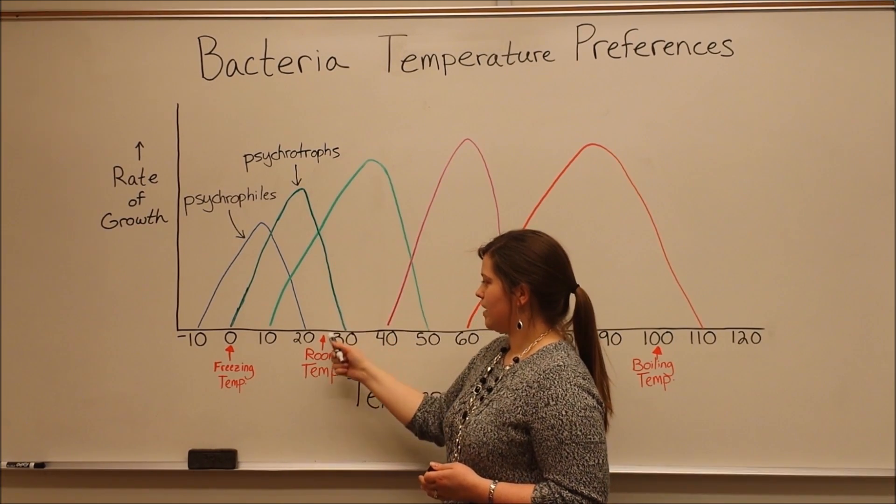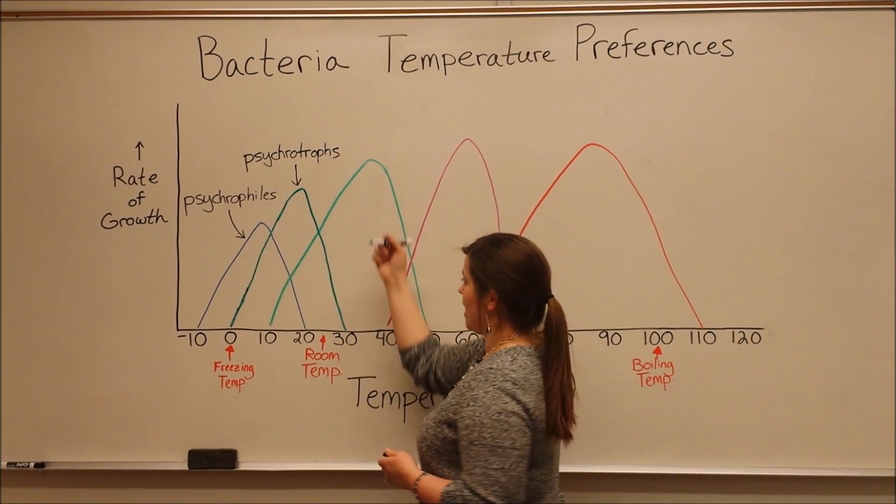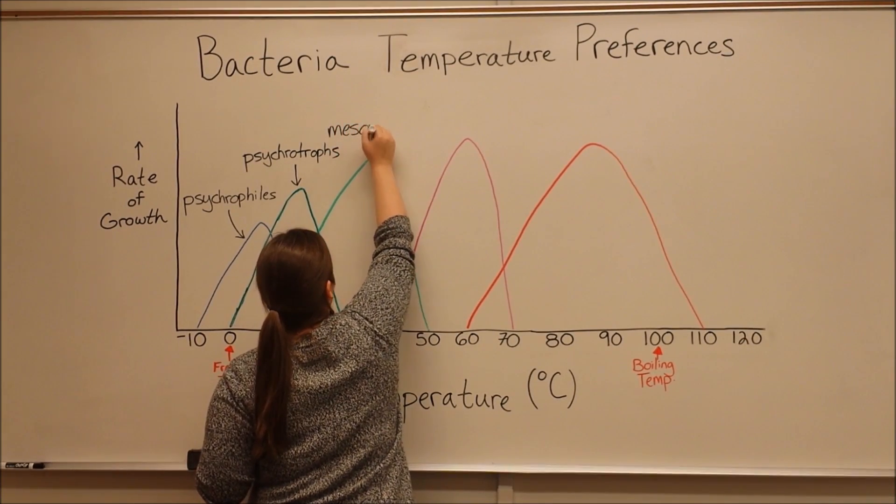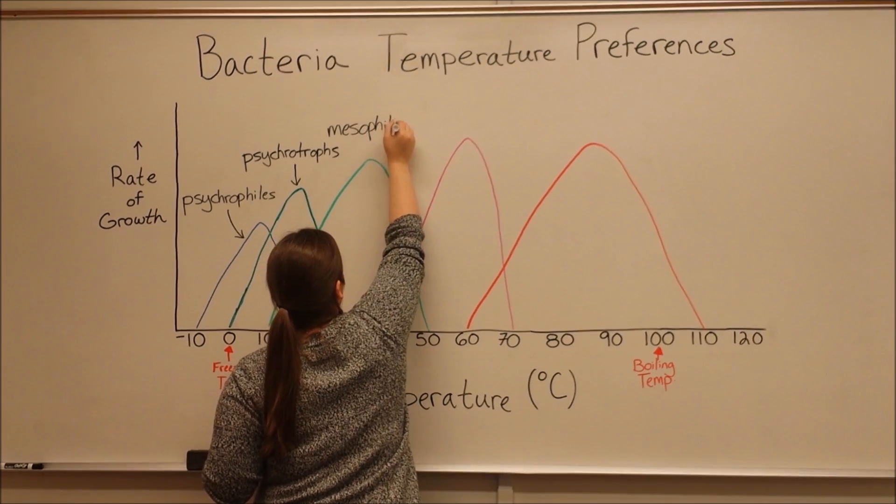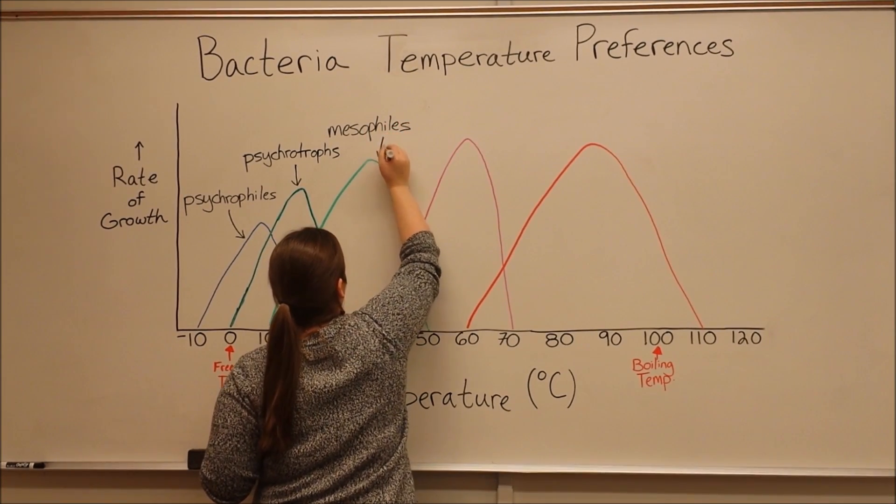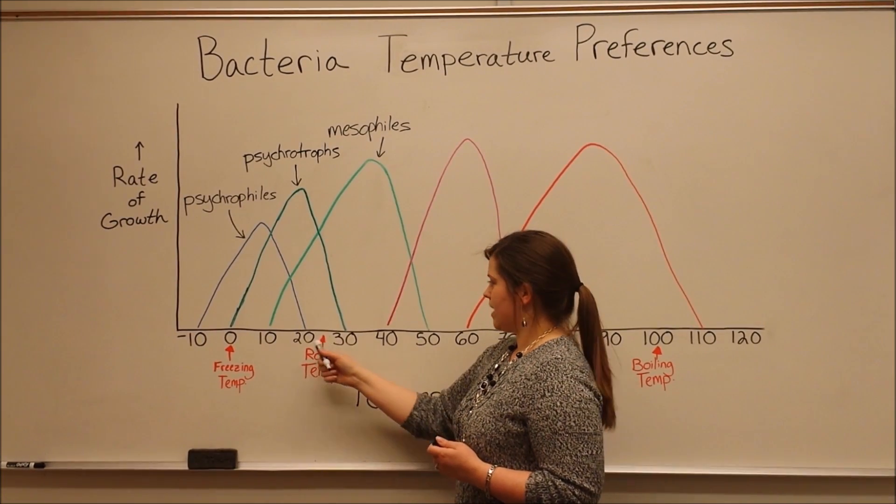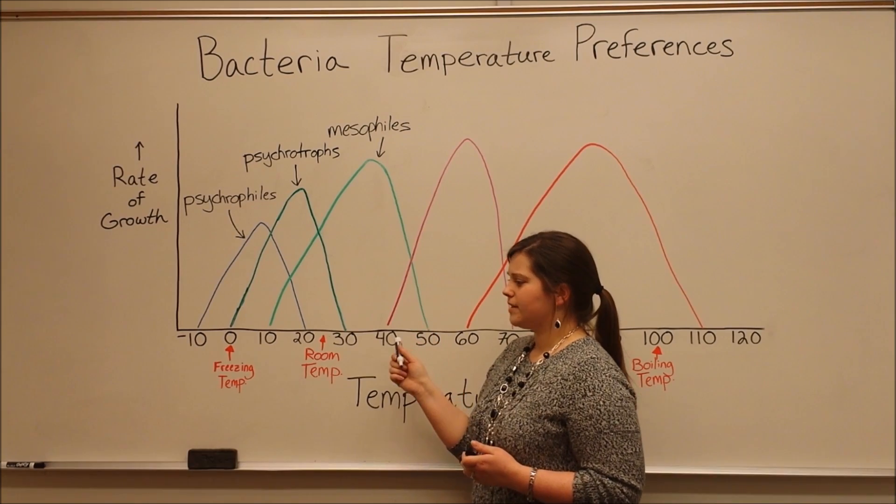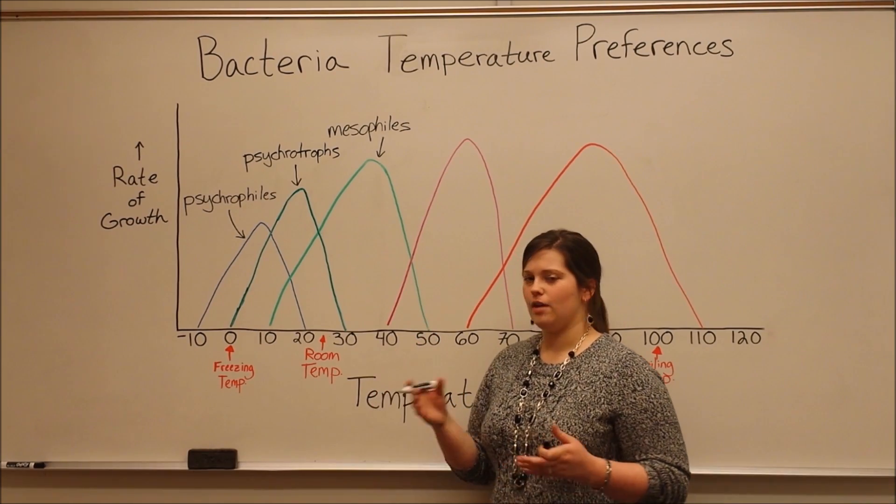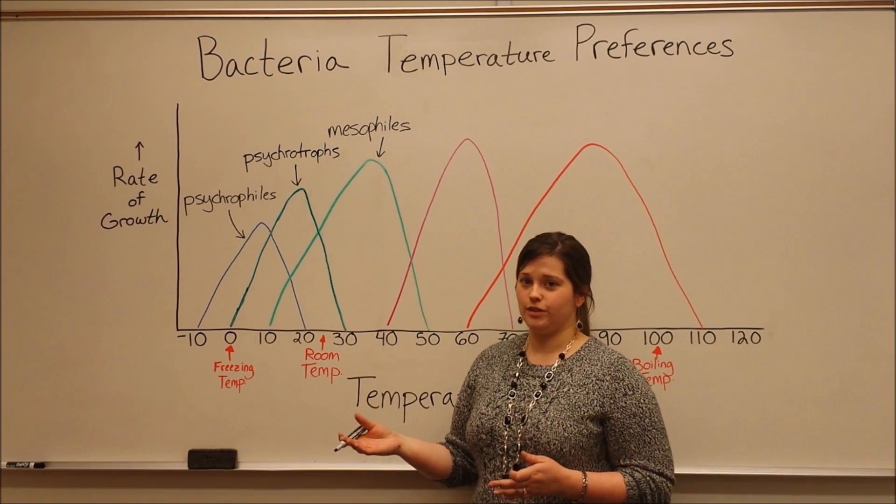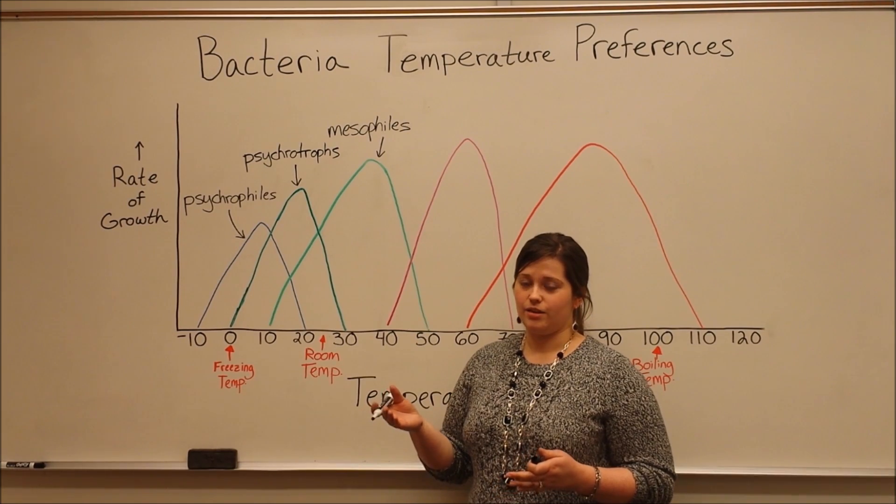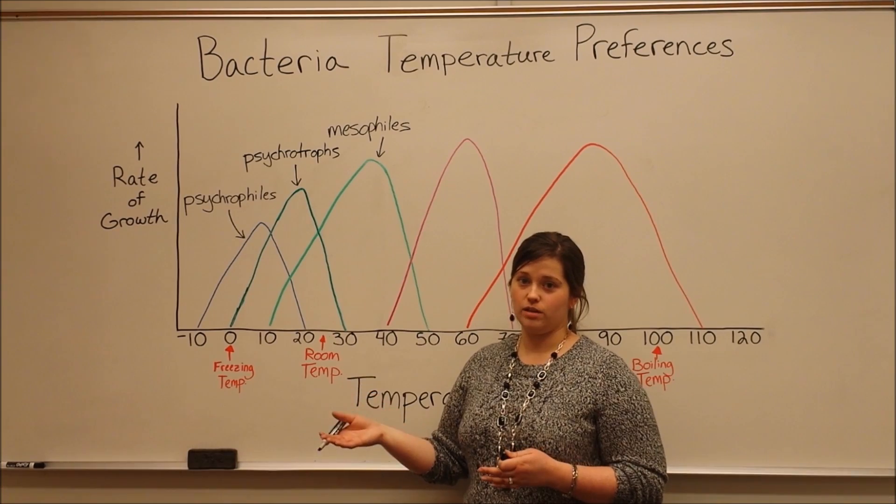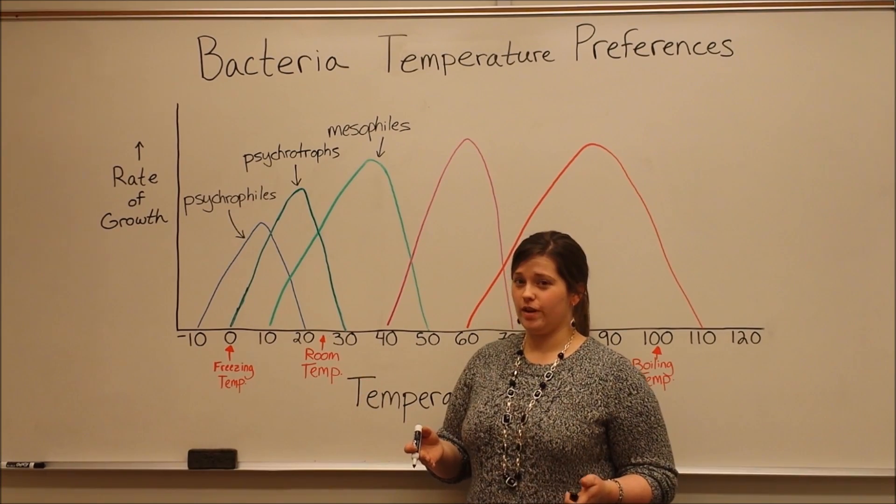Next, as we get into these warmer temperatures, we have mesophiles. Mesophiles grow best in the range from 20 to 40 degrees Celsius. These are bacteria where, for example, if you have some food and you leave it sitting out for several hours, and then you get sick from food poisoning because the food spoiled, because you forgot to put it into the refrigerator, those types of bacteria are mesophiles.